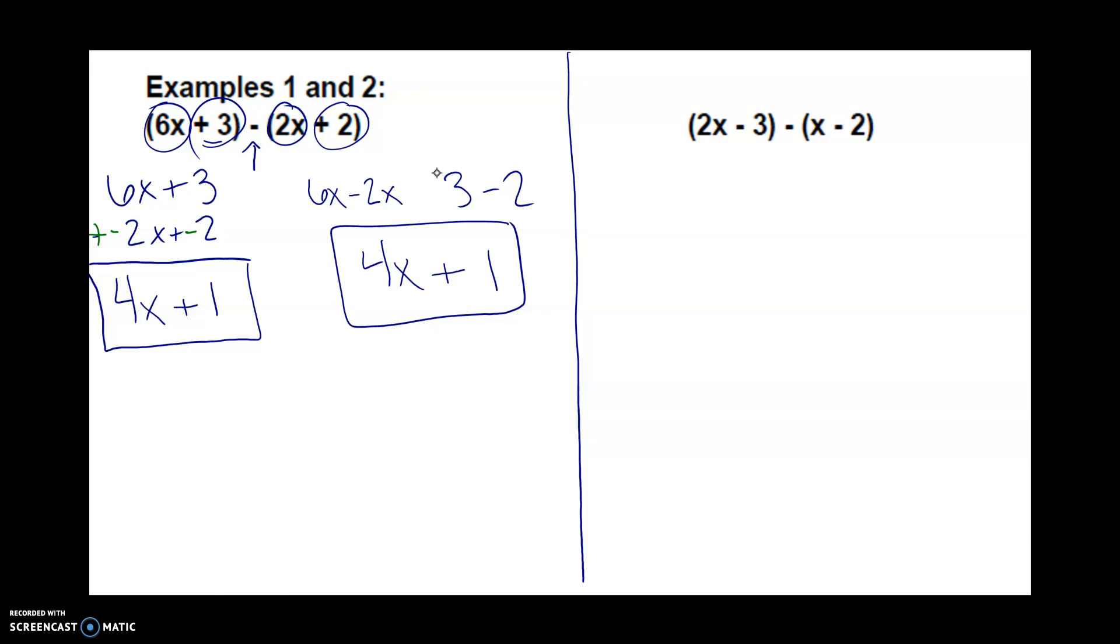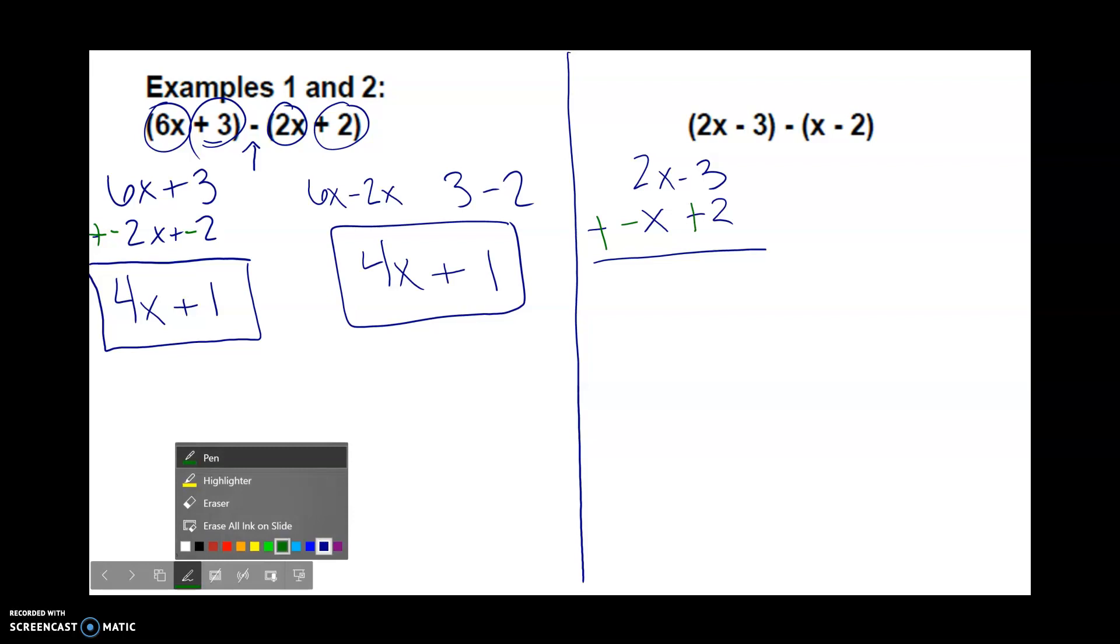I have 2x minus 3 minus x minus 2. If I stack it, 2x minus 3 minus x minus 2. Now if I add op, because I stacked them, this becomes plus negative x and a positive 2. I distributed, I did the add op for the whole row. 2x plus negative x is going to be 1x or x. Because remember, there's that secret hiding 1 here. 2 and negative 1.